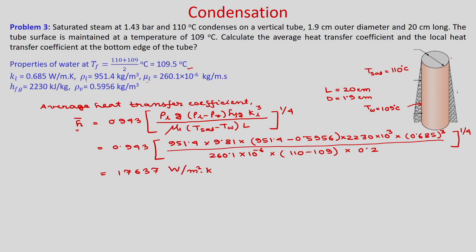At the bottom edge, x equals L. The local heat transfer coefficient h at x equals L is 3/4 times the average heat transfer coefficient - a relation we have already derived. So h equals 3/4 times 17637, giving 13227 Watt per metre square Kelvin.